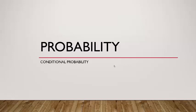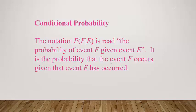In this video, I want to talk about an additional formula for probability called conditional probability. We use this notation: the probability of event F, given event E — the vertical line means 'given that.' So it's the probability that event F occurs given that event E occurs. We're going to find the probability of some event, but assume that another event E has already occurred. Let me set this up with an example.